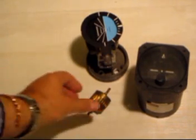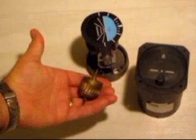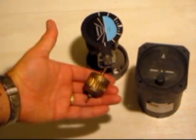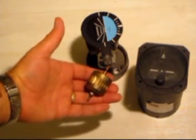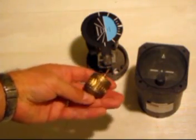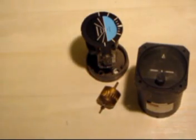Here is the rotor of the artificial horizon. This is a vacuum instrument. You can see the little notches there that catch the air and drive this rotor at high speed, high RPM.